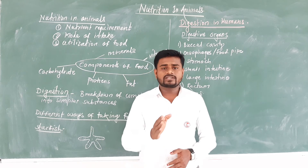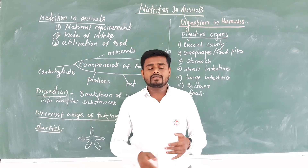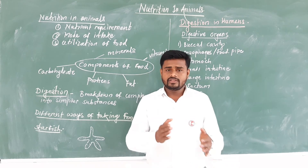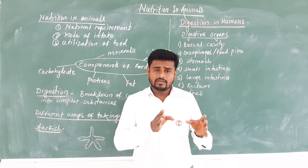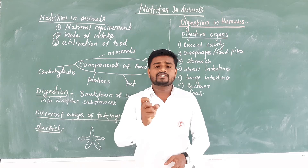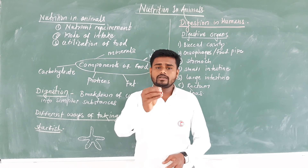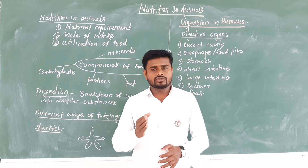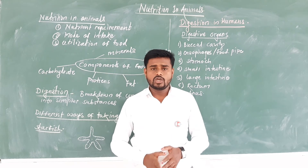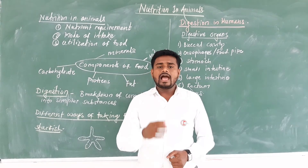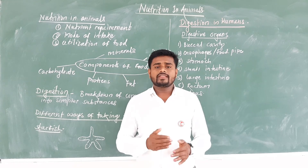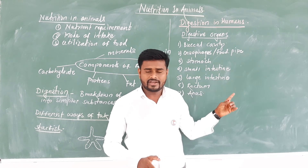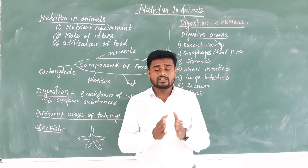The digestive system includes the alimentary canal along with glands: salivary glands, pancreas, and liver. These glands secrete digestive juices into specific organs. The digestive juices break down the complex substances into simpler substances. Together, the alimentary canal, all its organs, and these glands form the complete digestive system.